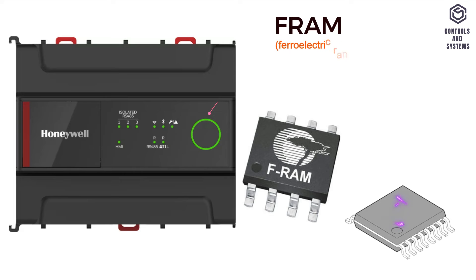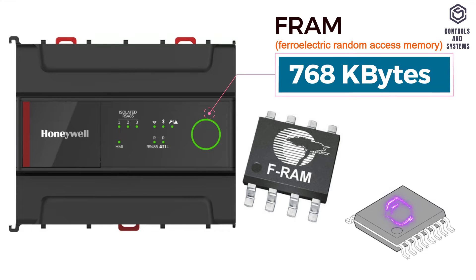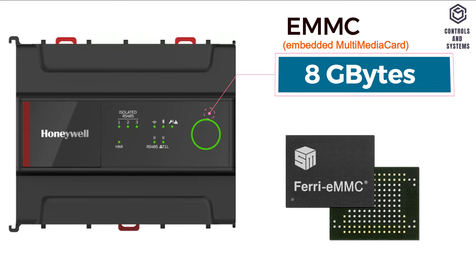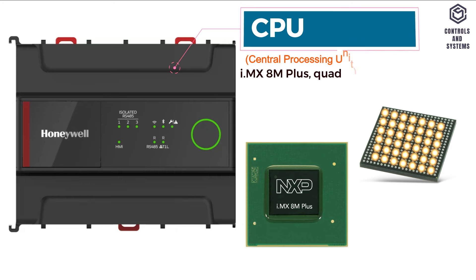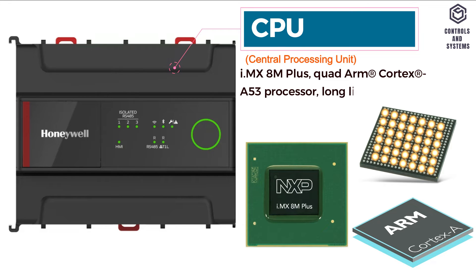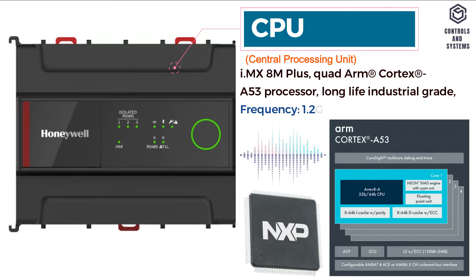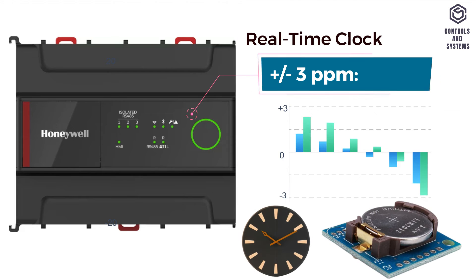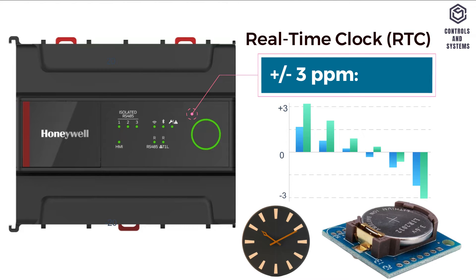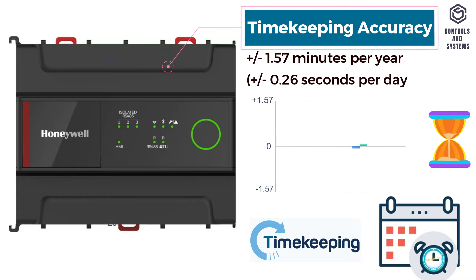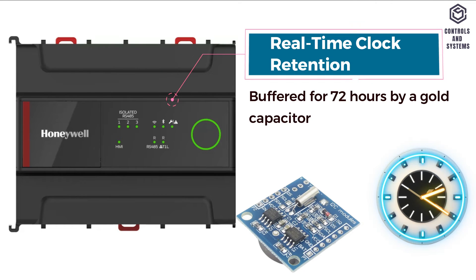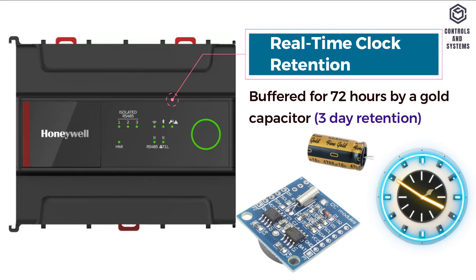Hardware Specifications: F-RAM is 768 KB, LPDDR4 is 2 GB, EMMC is 8 GB. CPU is i.MX8M+ Quad ARM Cortex-A53 processor at 1.2 GHz frequency. Operating system is 64-bit Ubuntu Core OS. Real-time clock accuracy is ±3 parts per million, timekeeping accuracy is ±1.57 minutes per year, and real-time clock retention is buffered for 72 hours by a gold capacitor.